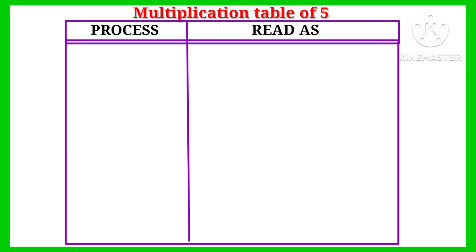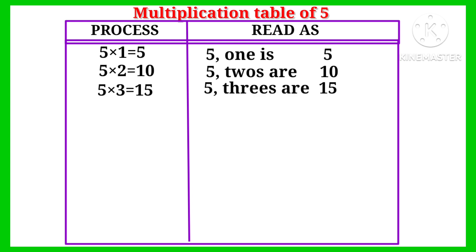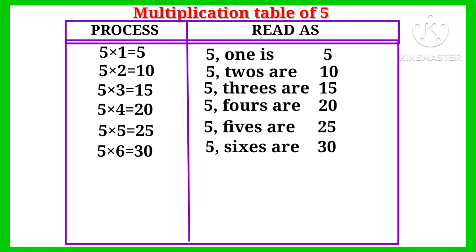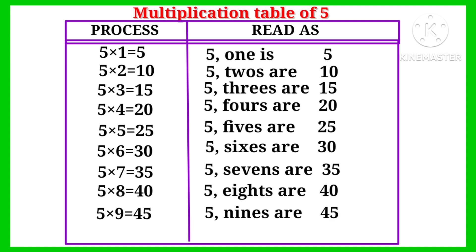Multiplication table of five: five one is five, five twos are ten, five threes are fifteen, five fours are twenty, five fives are twenty-five, five sixes are thirty, five sevens are thirty-five, five eights are forty, five nines are forty-five, five tens are fifty.